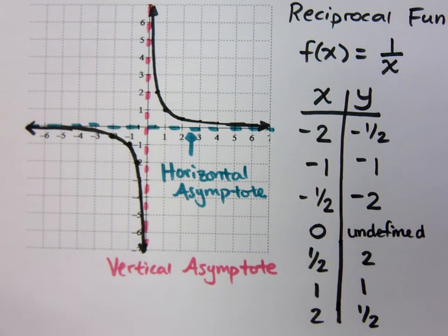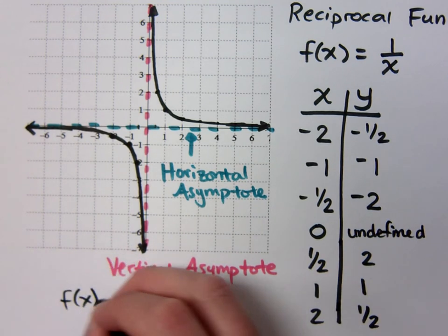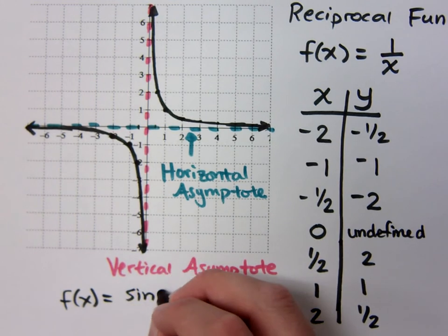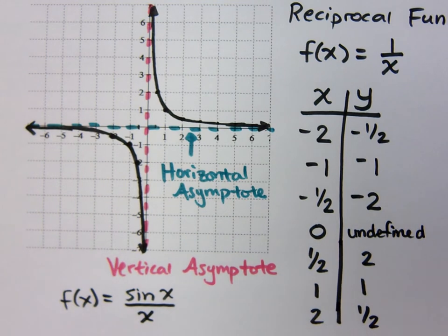A great example of this, something for you to graph, is check out f of x is equal to the sine of x divided by x. We talked about that sine curve yesterday, how it just kind of oscillates, it goes back and forth. If I put this guy divided by x, even though sine of x is going to bounce between negative 1 and 1, what's going to happen here is x gets larger and larger.